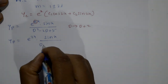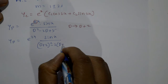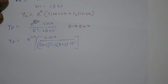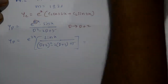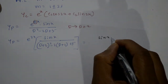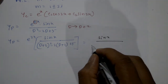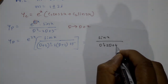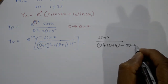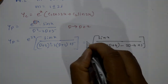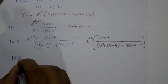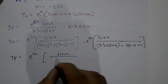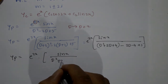After shifting D to D+2, the denominator becomes (D+2)² - 2(D+2) + 5. Expanding: D² + 4D + 4 - 2D - 4 + 5 = D² + 2D + 5. So yp = e^(2x)·sin x / (D² + 2D + 5).